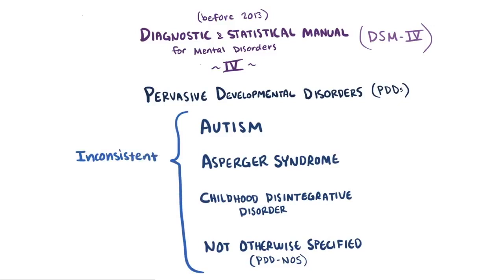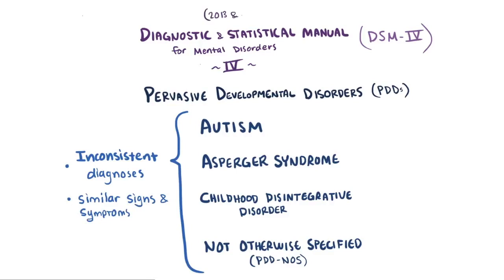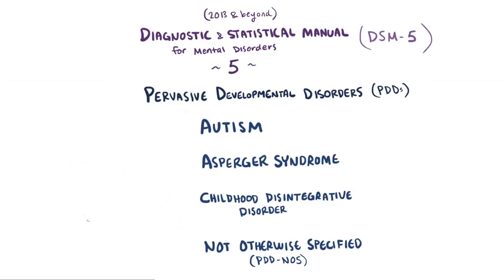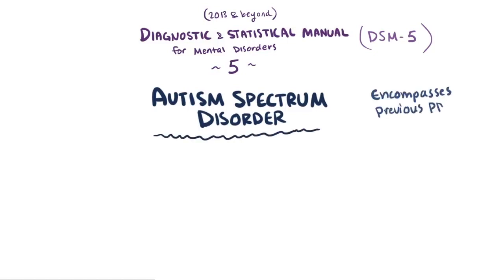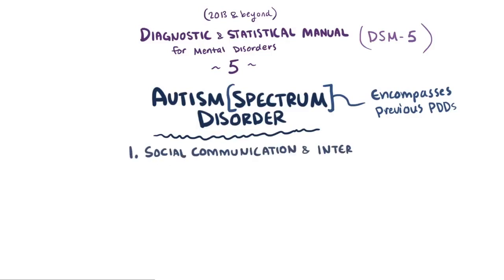Researchers found, however, that separate diagnoses of these pervasive developmental disorders weren't consistent across different clinics, since they tend to have very similar signs and symptoms. As of 2013, the DSM-5, a new revised edition, removed these terms and replaced them with Autism Spectrum Disorder or ASD, which encompasses all the previous pervasive developmental disorders but uses a scale or spectrum that differentiates based on the severity of two major areas: social communication and interaction deficiencies.